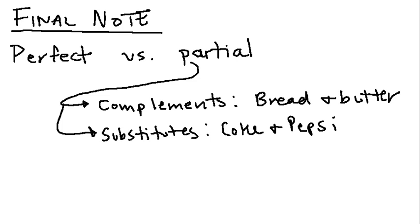Because bread and butter and Coke and Pepsi are not perfect complements and perfect substitutes, their indifference curves are not going to be identical to the ones that we went over in questions. Instead, they are going to be in between the indifference curves of the perfect complements and the perfect substitutes and the ideal, normal indifference curve. So, for example, for bread and butter, which are complements, we might get an indifference curve that looks kind of like this. For Coke and Pepsi, we might get indifference curves that look kind of like this.